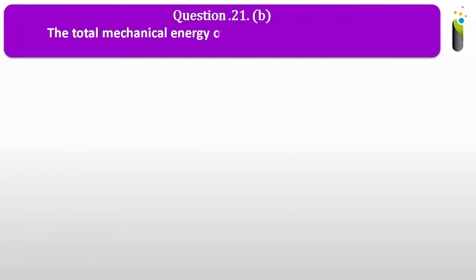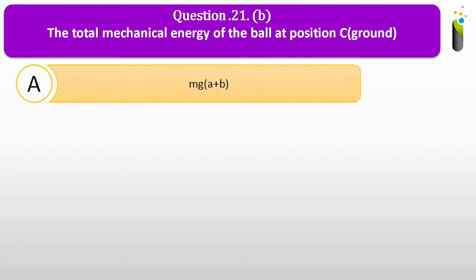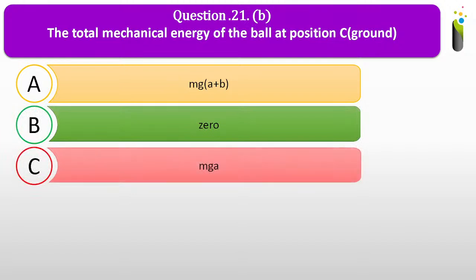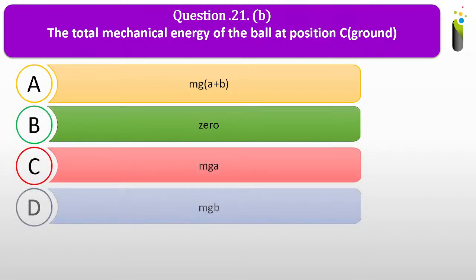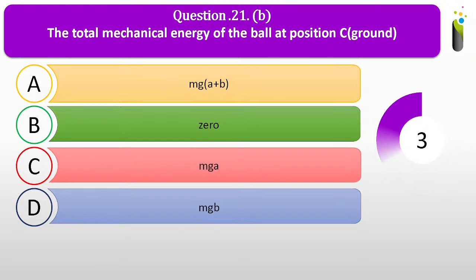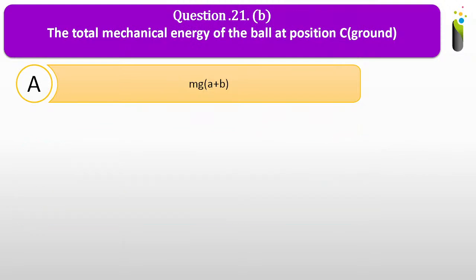Question number twenty-one B. The total mechanical energy of the ball at position C, that is the ground, is dash. Options: A, Mg(A + B); B, 0; C, MgA; D, MgB. The correct answer is A: Mg(A + B) is the total mechanical energy of the ball at position C.